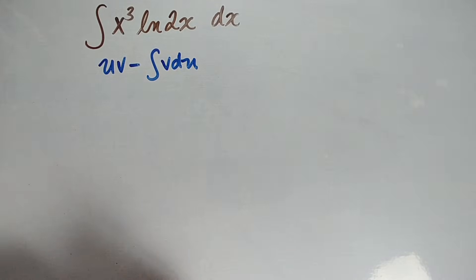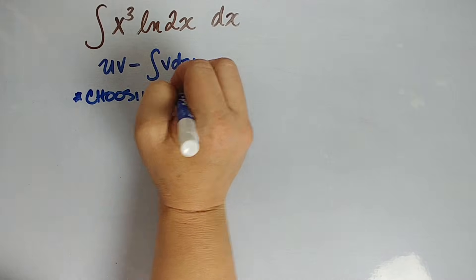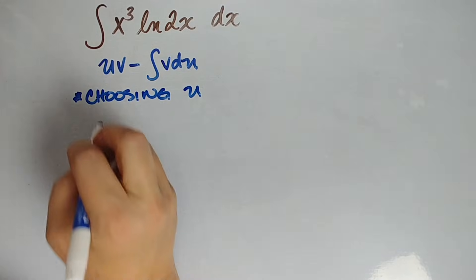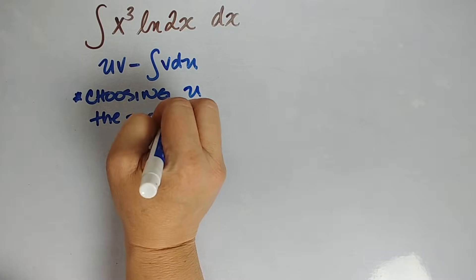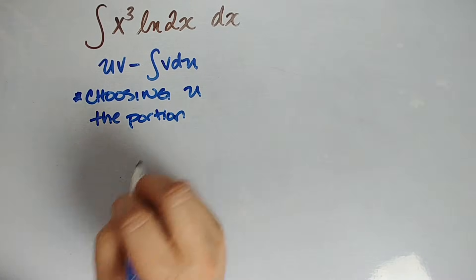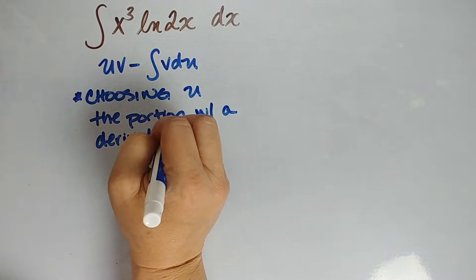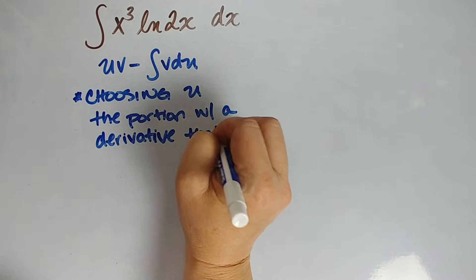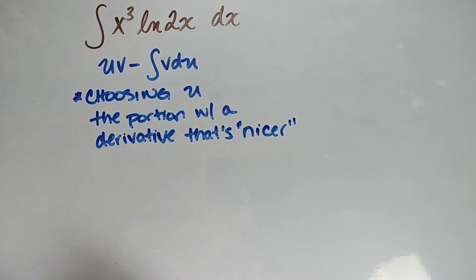Basically what we're going to do is call one part of our integral u, and call the other part dv. Now, how to choose. This is important, choosing which part to call u. You want to choose the thing, the portion that if you were to instead deal with its derivative, that is nicer to deal with.